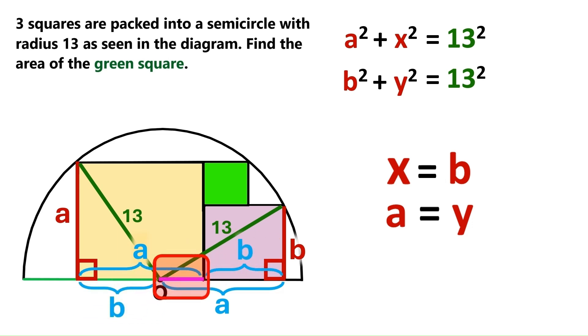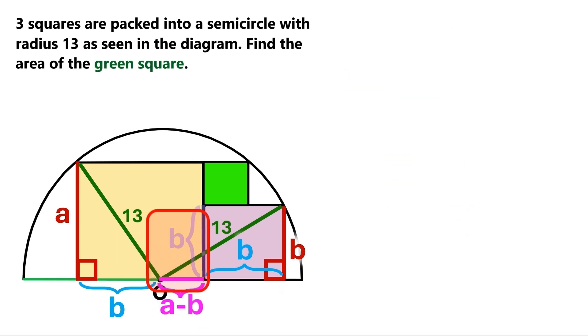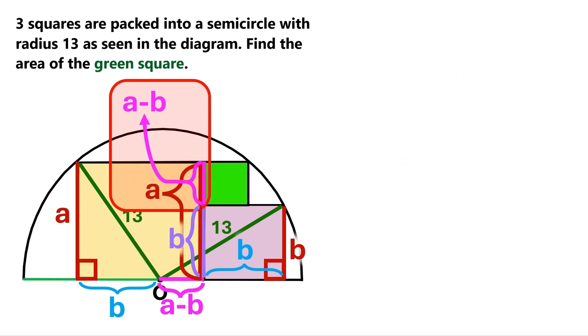And this magenta segment down here is evidently a minus b. Now this side is also b. And this bigger side is a. So this segment, which is the side of the green square, must also be a minus b.